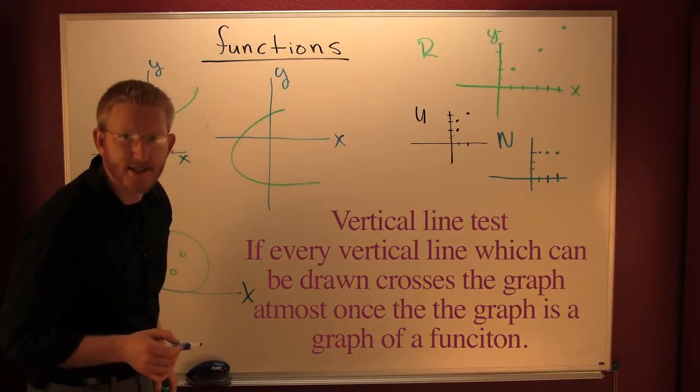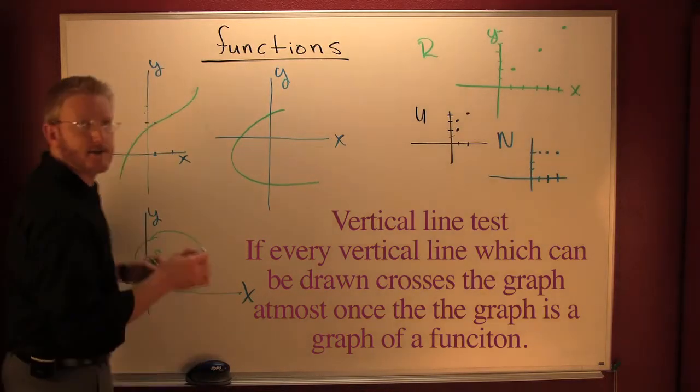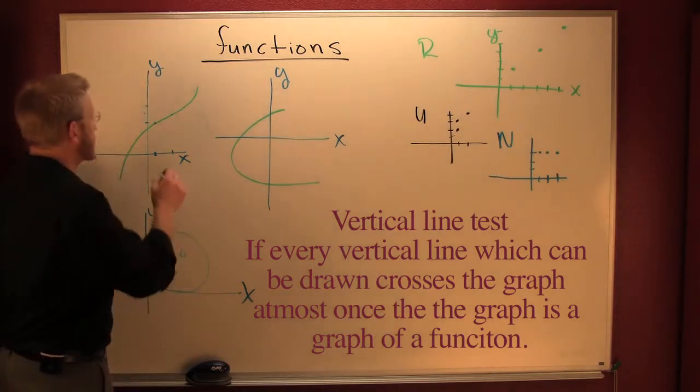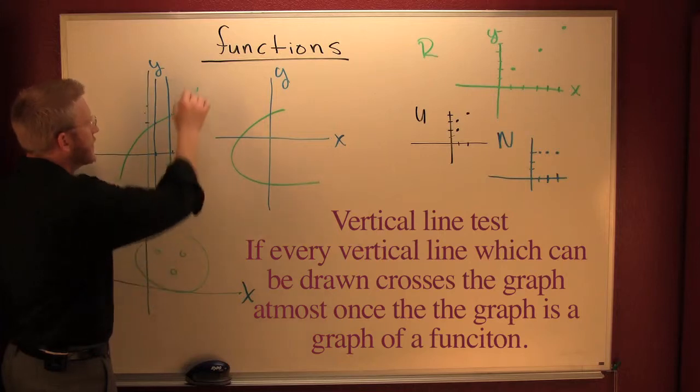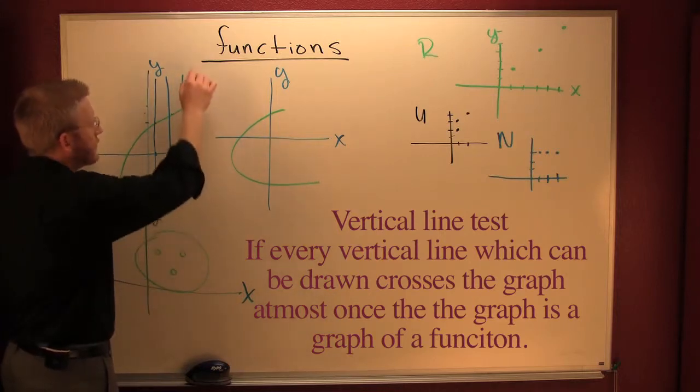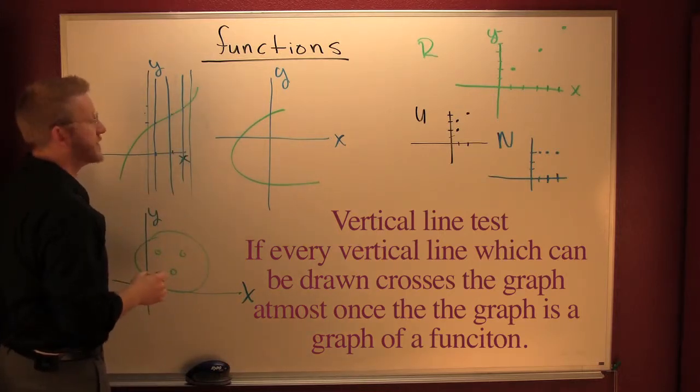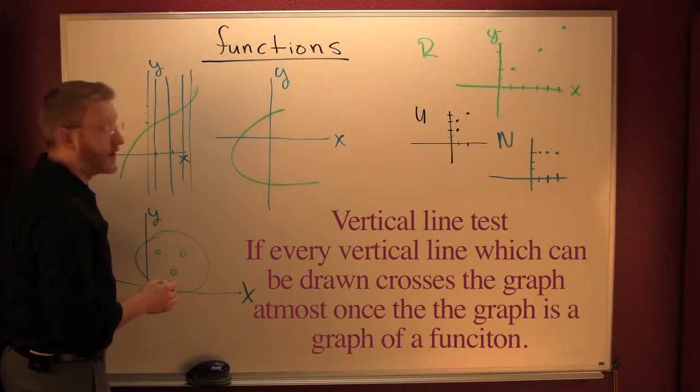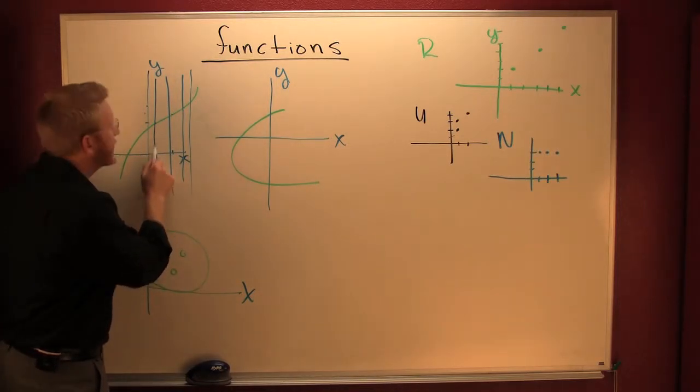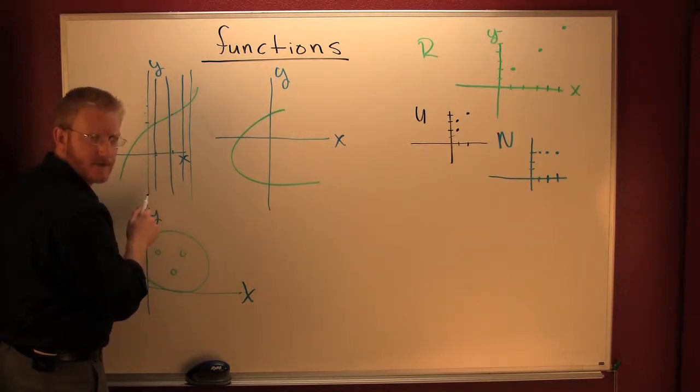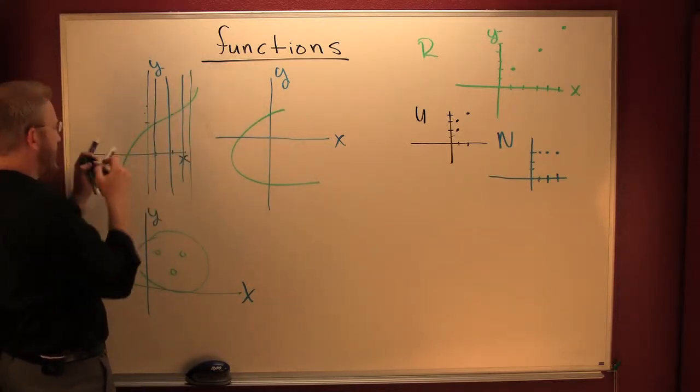And one way that we test this thing is called the vertical line test. It says for every vertical line we can draw, if it only passes in at most one spot, then it is the graph of a function. And that's what you're testing—if each domain element has exactly one range element. This one is a function.